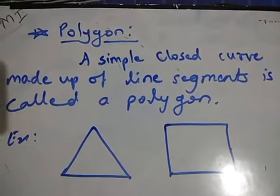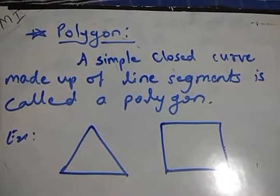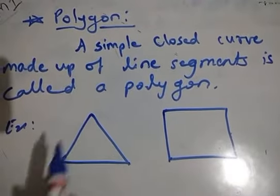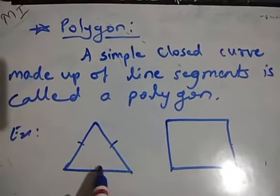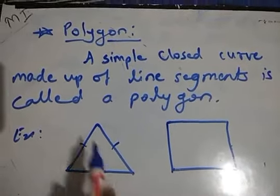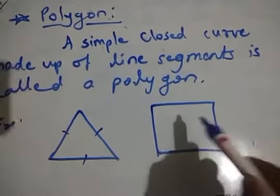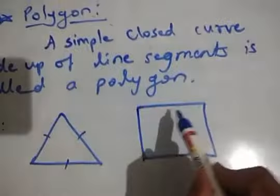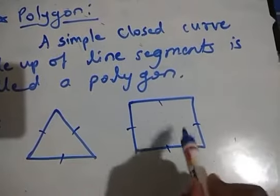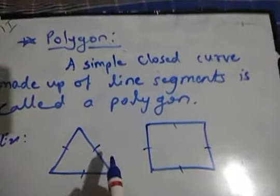The next part is polygon. A simple closed curve made up of line segments is called a polygon. For example, this is a polygon made up of three line segments — it is a triangle. This quadrilateral has four sides and is also a closed curve made up of line segments. So any shape which is made up of line segments and which is closed, we call as polygon.